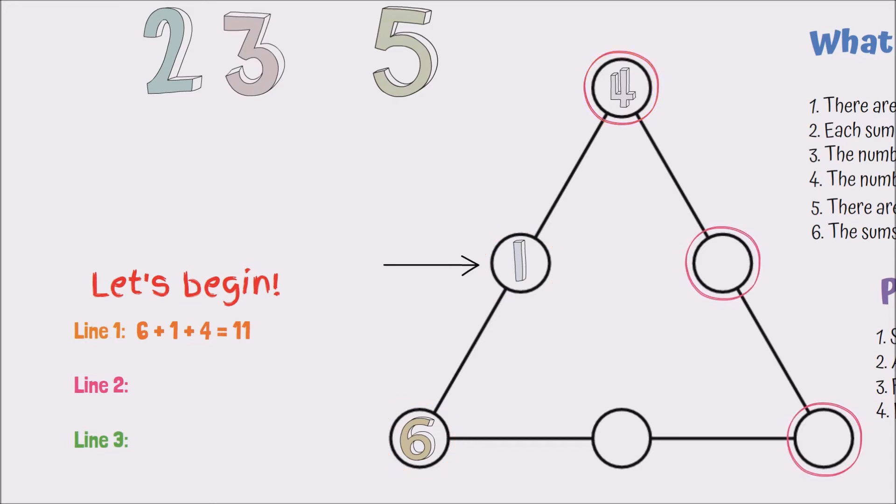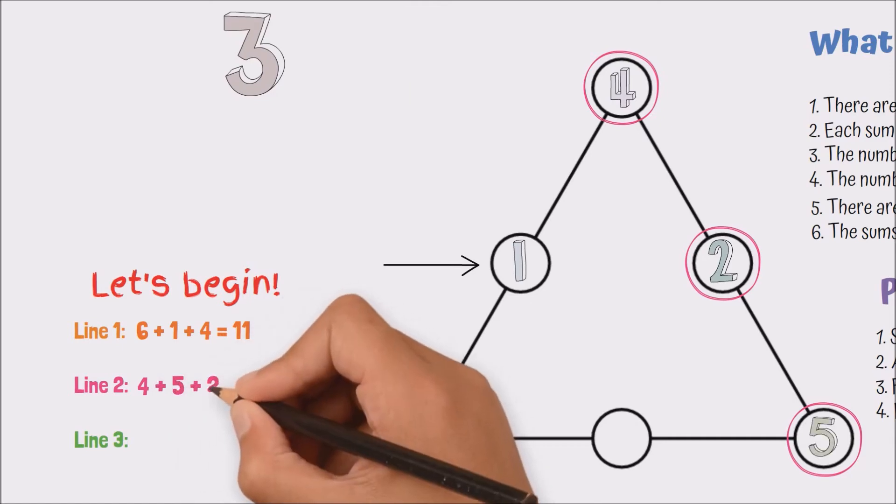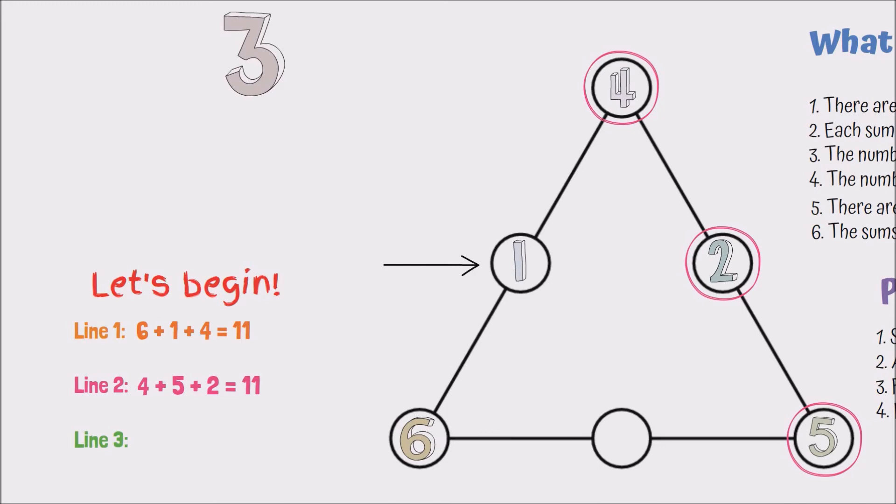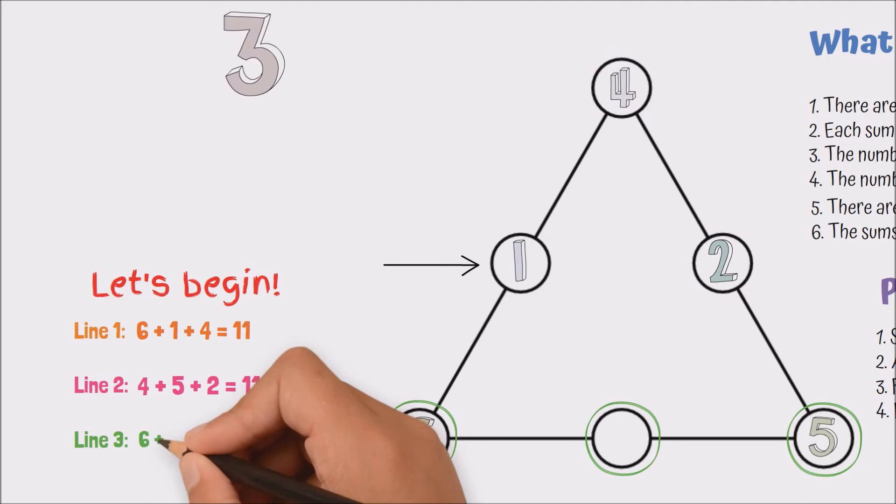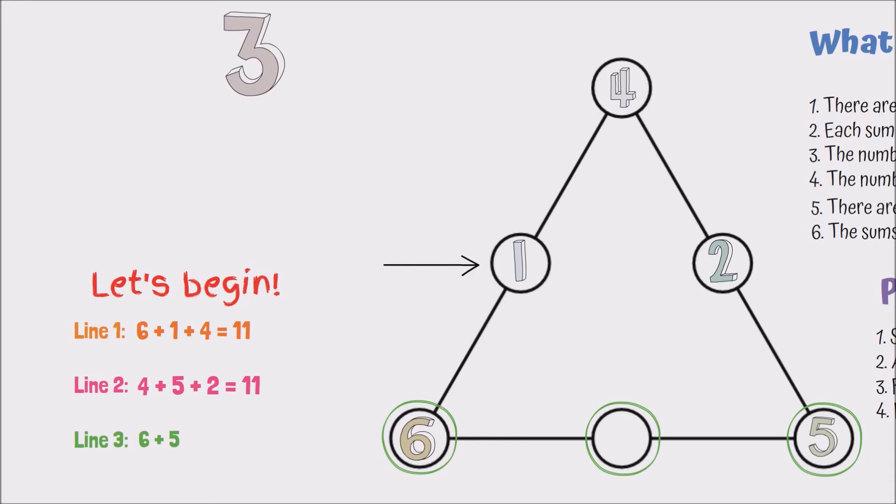The next thing I'm going to do is add 2 here. So 4 plus 2 is 6. So I need to add 5 here to make it 11 as well. So I have 11 on these two sides. And now for my last line, I have 6 plus 5, which is 11. So that makes no sense because I have an empty slot and I've already made the sum. So that won't work.